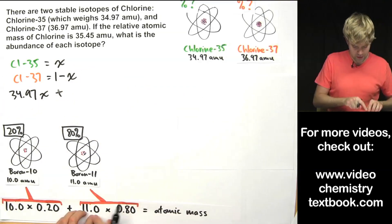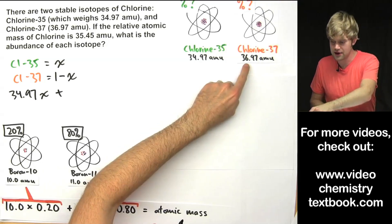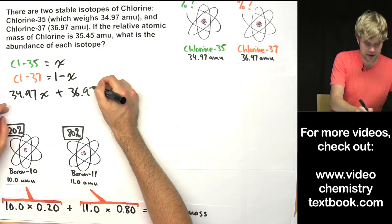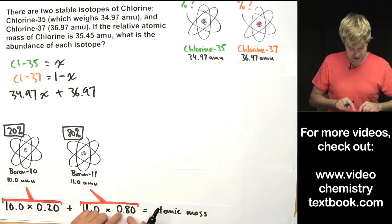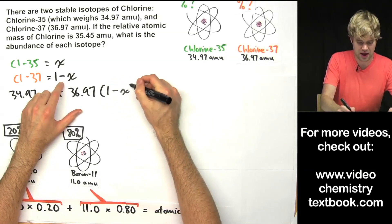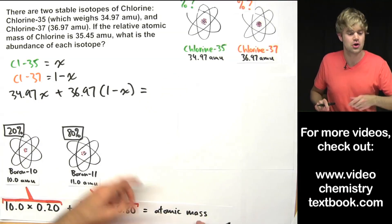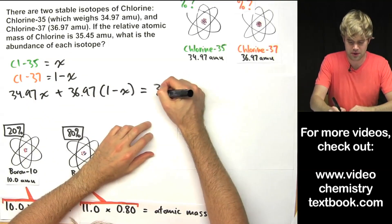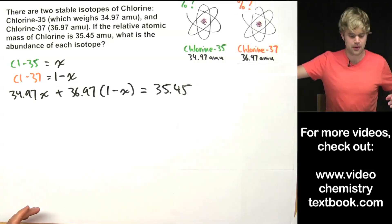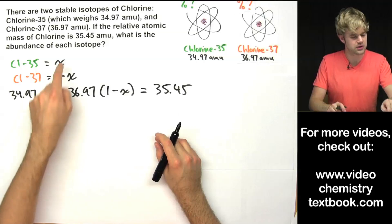Now we move on to the second isotope. We take the mass of chlorine-37, which is 36.97 amu, and multiply that by its abundance, which is 1 minus x. We add those two together, and unlike the boron example where we don't know the atomic mass, we already do know the atomic mass for chlorine — that should be 35.45. Now we've set up our equation and all we have to do is rearrange, multiply, and divide to solve for x.